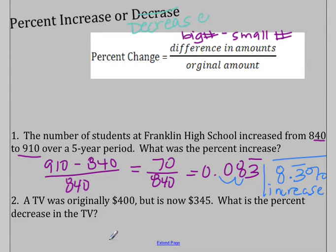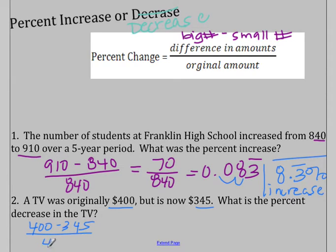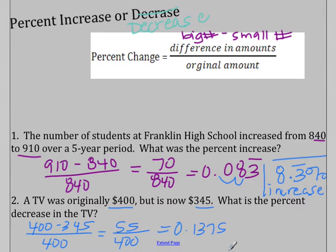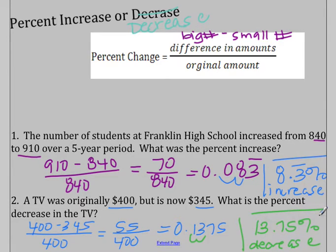A TV was originally $400 but now it is $345. What is the percent decrease? Bigger minus smaller over the original: 400 minus 345 is 55, so 55 over 400. On the calculator that gives 0.1375. Moving the decimal gives 13.75 percent. Since we're going from $400 down to $345, it's a 13.75 percent decrease.